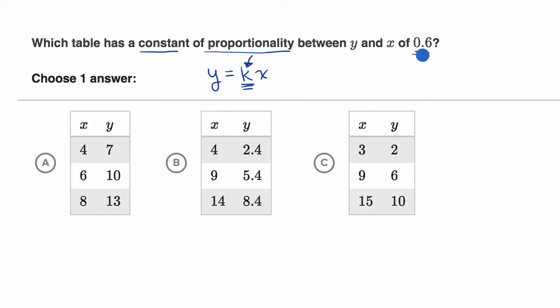So if that's going to be 0.6, in our tables, or in the table that has a constant of proportionality of 0.6, y should be equal to 0.6 times x for every xy pair. So let's look at these choices.